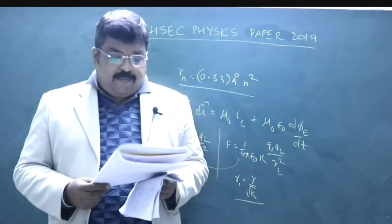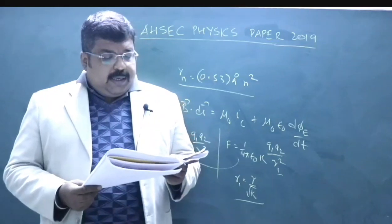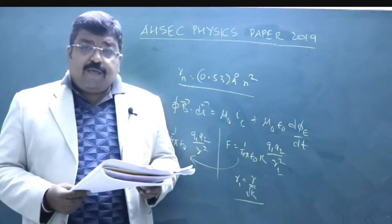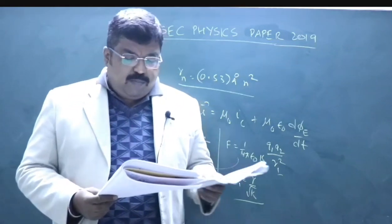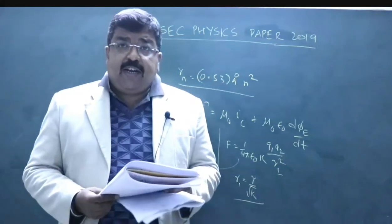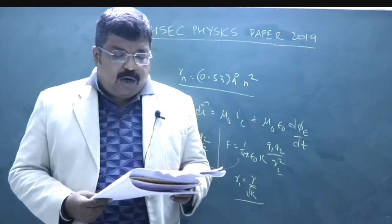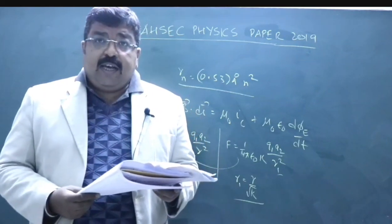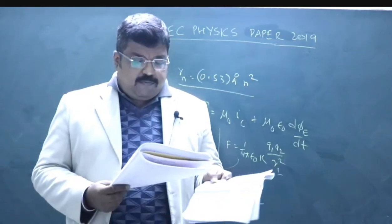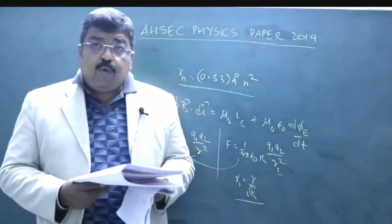Obtain the expression for drift velocity of electron - again textbook based question page 98 volume 1. Establish the relation between focal length and radius of curvature - page 312 volume 2.